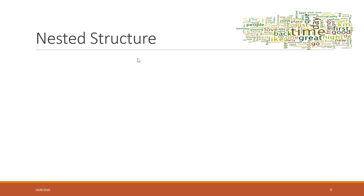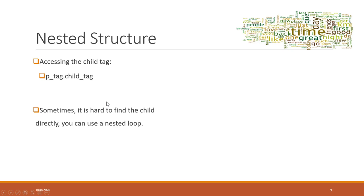HTML has a nested structure, as we learned last week. To access a child tag, you can use parent_tag.child_tag. However, sometimes it is very hard to find all child tags directly that way, so in that case you will need a loop — and sometimes a nested loop.